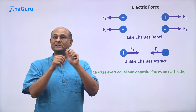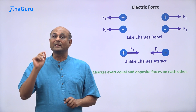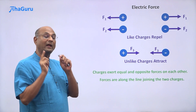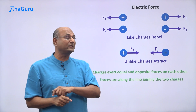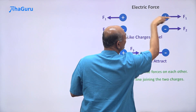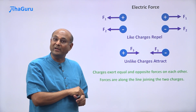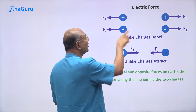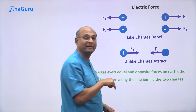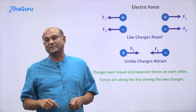Otherwise Newton's third law would be violated, so this is a very important point to keep in mind. The second important point is that these electric forces are along the line joining the two charges. Notice this force is like that and this force is like this — they are along the line joining the two charges. It is not in some other direction; it is along this line. Here also it is along the line joining these two charges.